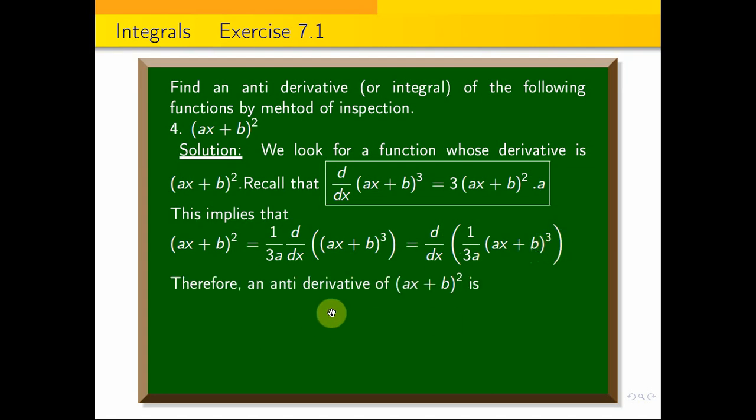Therefore, an antiderivative of (ax + b)² is 1/(3a) · (ax + b)³. So, this is the answer for this problem.